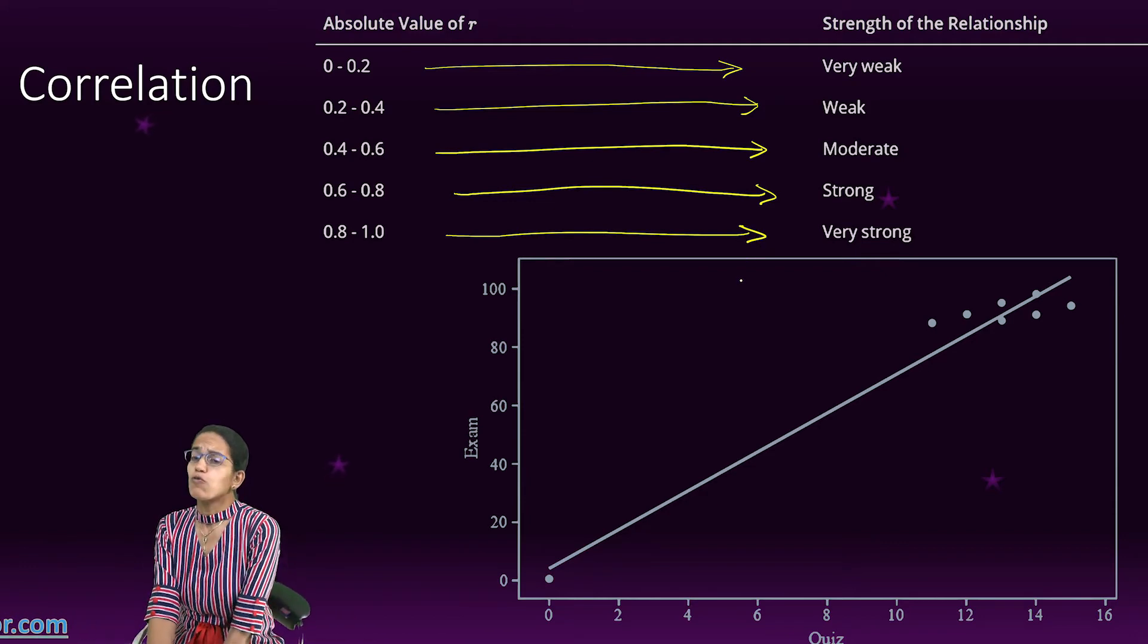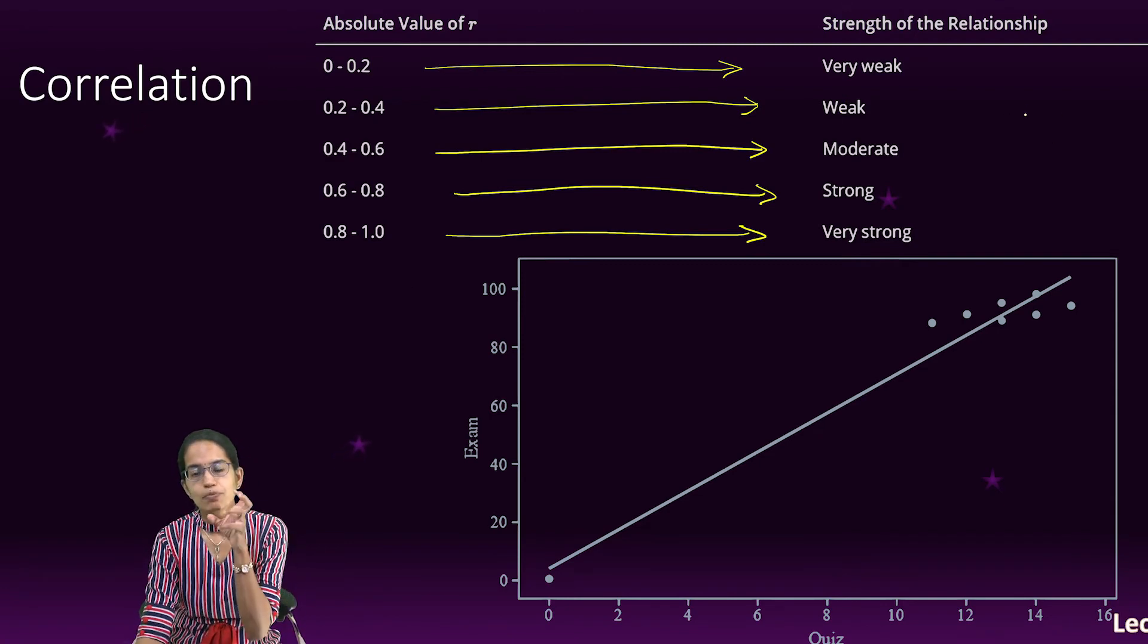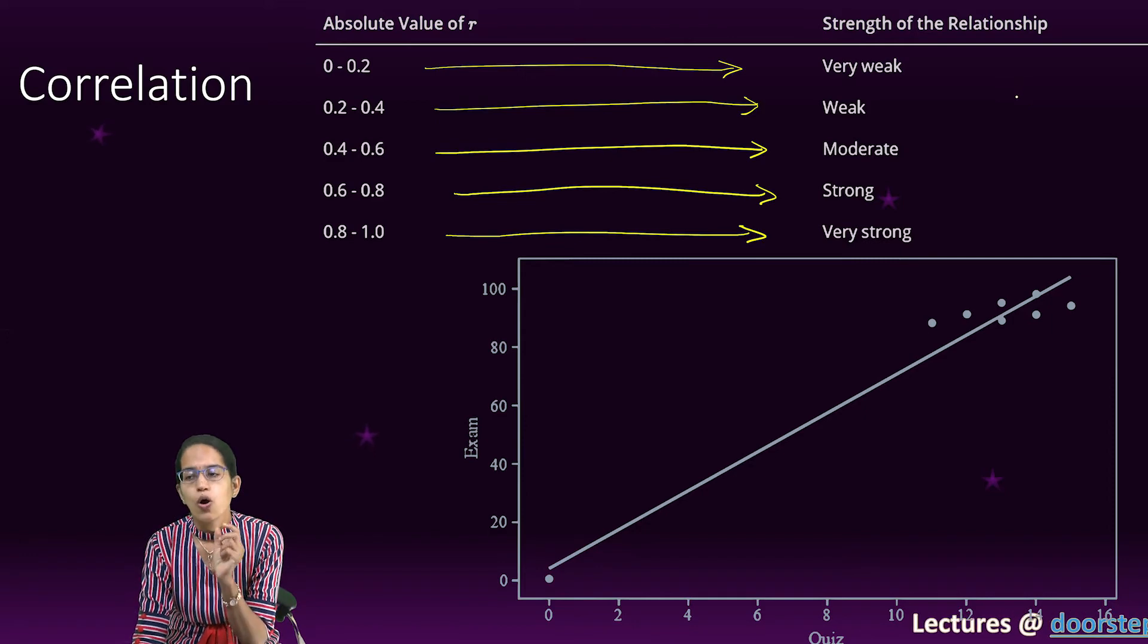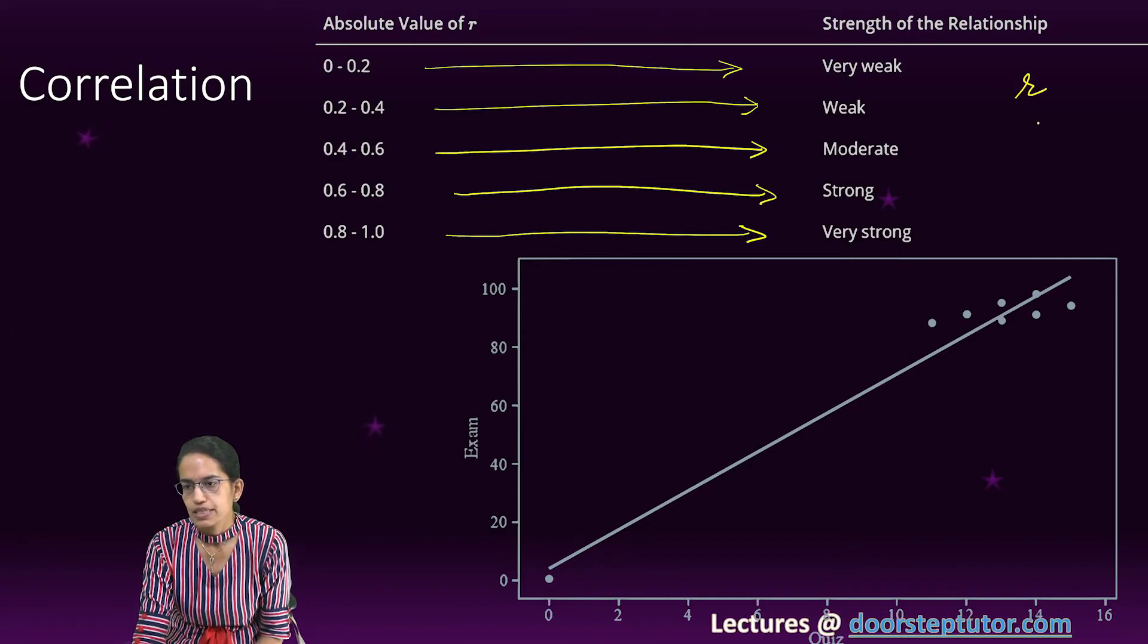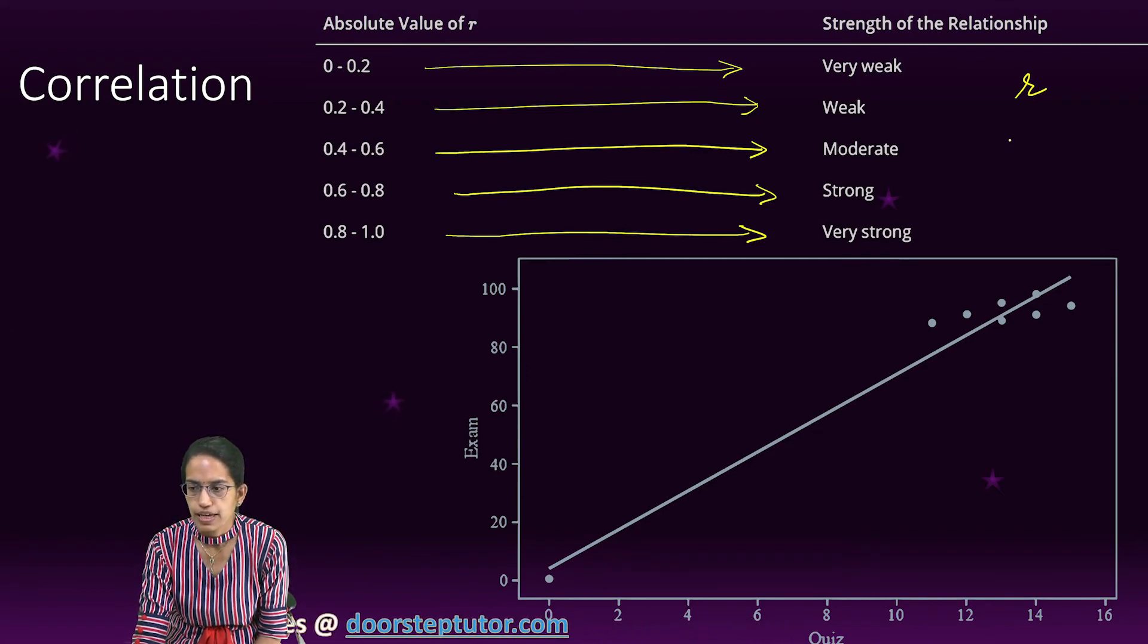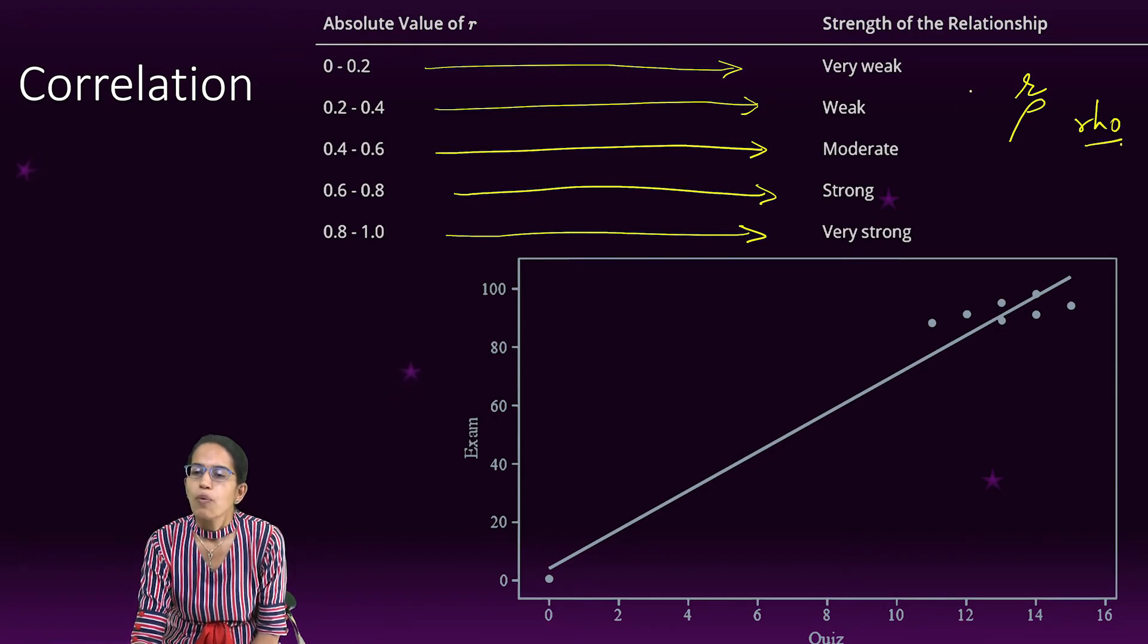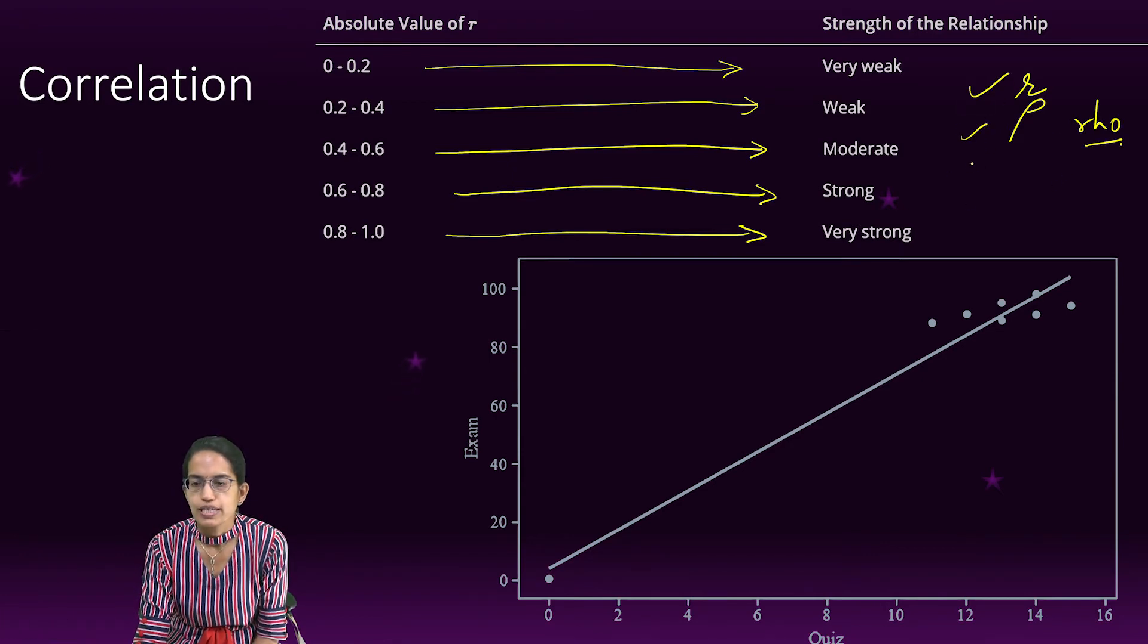What are the properties? Now before we come to the properties, let's understand the representation. If I am doing the correlation on a sample, I represent it with letter r. If I am doing it on the whole population, I represent it with a Greek letter which is known as rho.